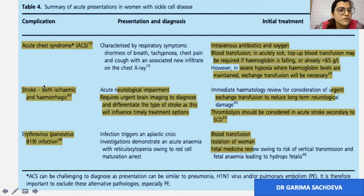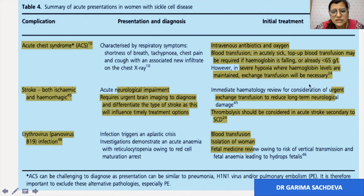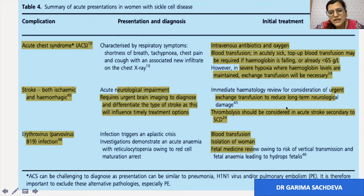For acute stroke management, it can be both ischemic and hemorrhagic, associated with acute neurological impairment. Urgent brain imaging is required to diagnose and differentiate the type of stroke. Urgent exchange transfusion should be arranged to reduce long-term neurological damage. Thrombolysis should also be considered in acute stroke secondary to sickle cell disease.